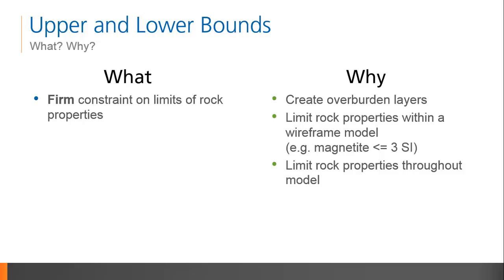We'll start with the simplest type of constraint, and one that can be applied to a wide variety of situations. Upper and lower bounds are firm constraints on the rock property within a specified region. The constraint can be used to create overburden layers from grids, or used to limit rock properties within a volume defined by a wireframe. You can also enforce limits on density or susceptibility throughout the entire model.